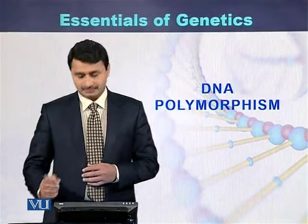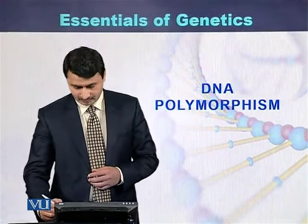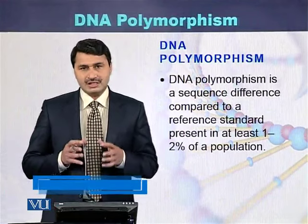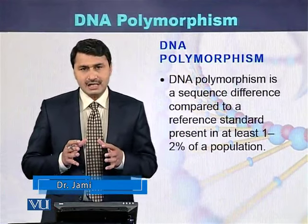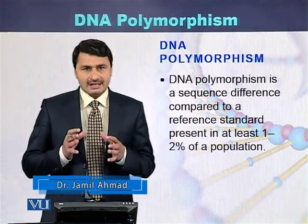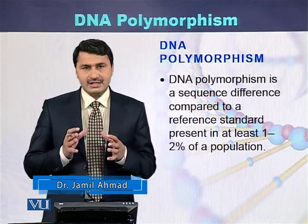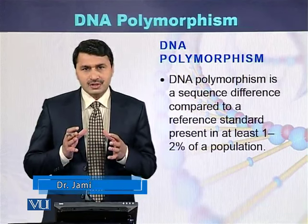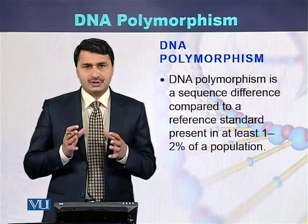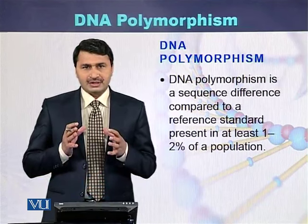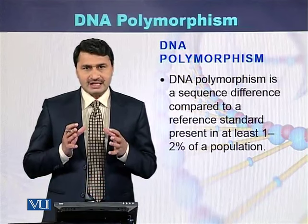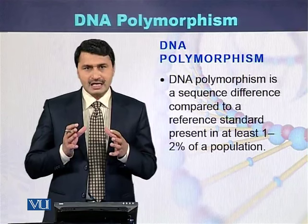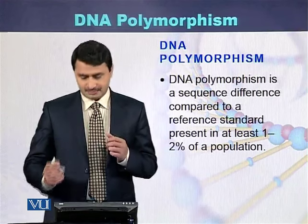DNA polymorphism is a sequence that is compared to a reference standard, which is present in 1 to 2 percent of a particular population. If there is such a difference in the population, it is called DNA polymorphism.